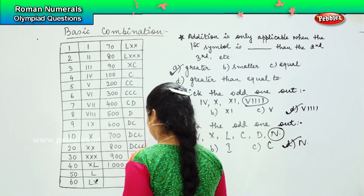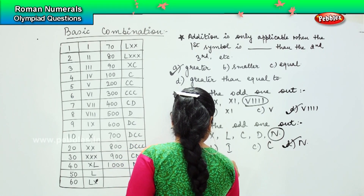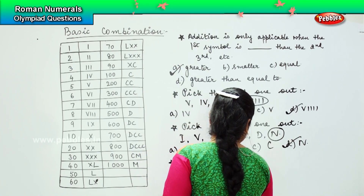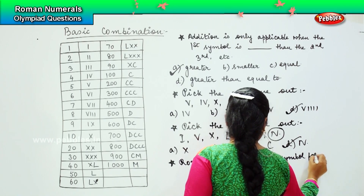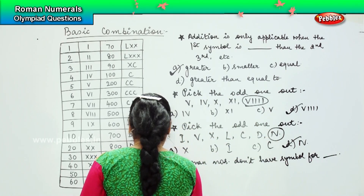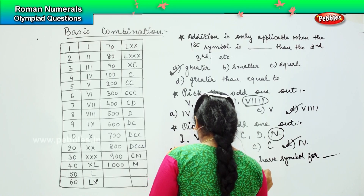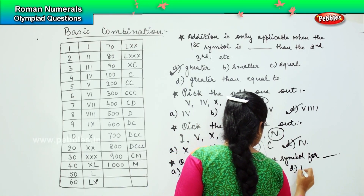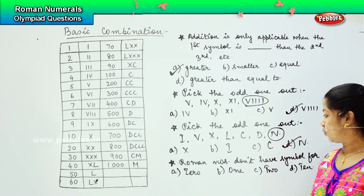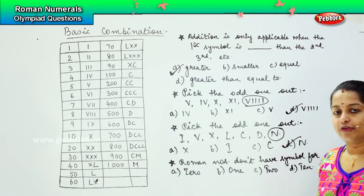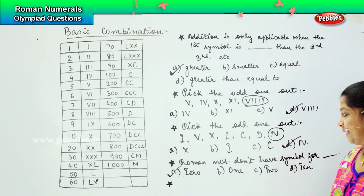The next question says: Roman numbers do not have a symbol for dash. The options are: A - zero, B - one, C - two, D - ten. Which of these does not have a value in Roman numerals? Very good — it is zero. For zero, we don't have any Roman numeral figure. So option A is the right one.